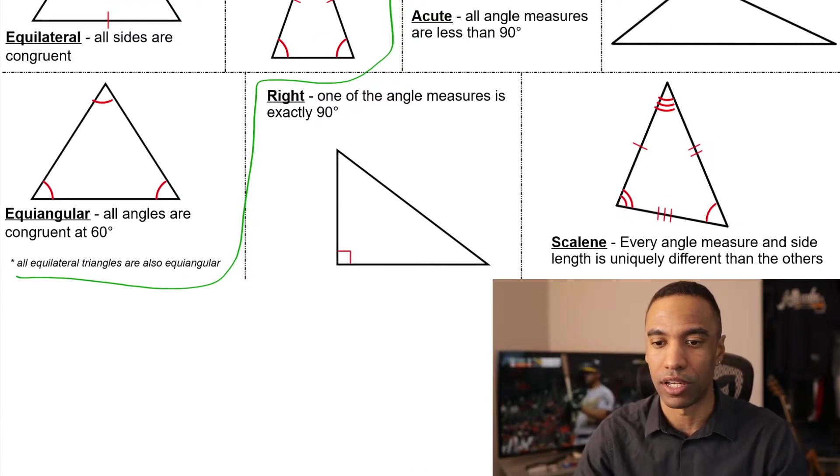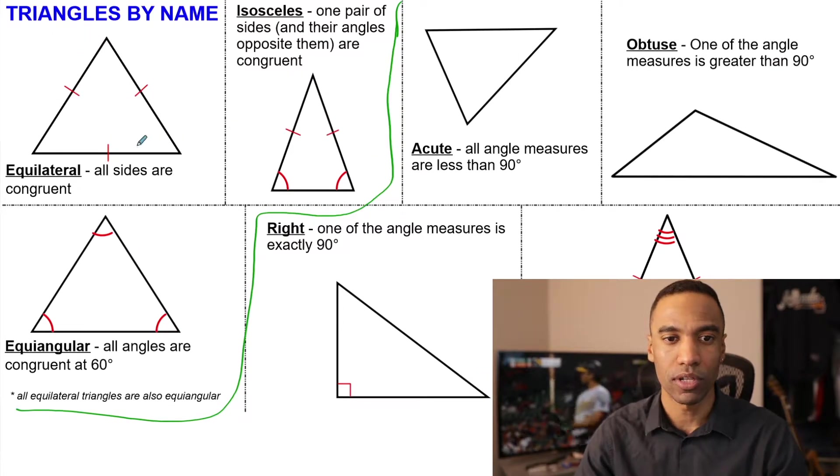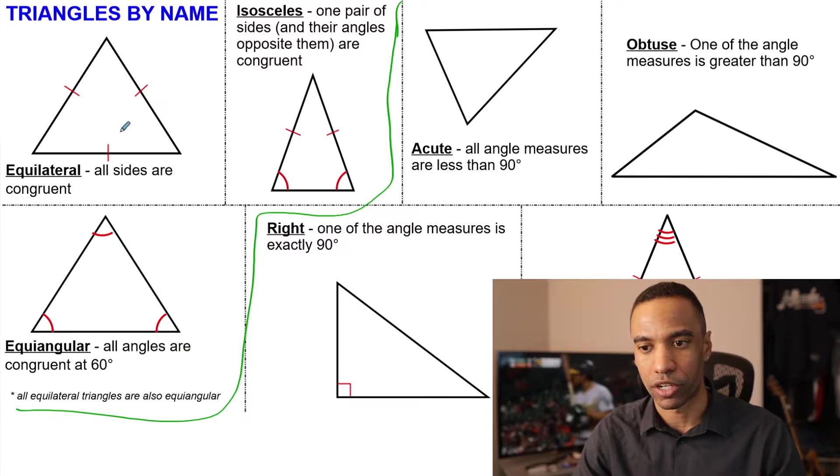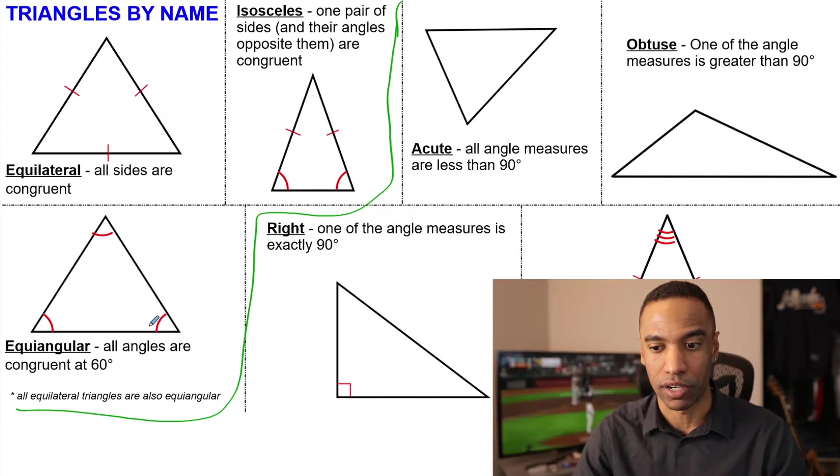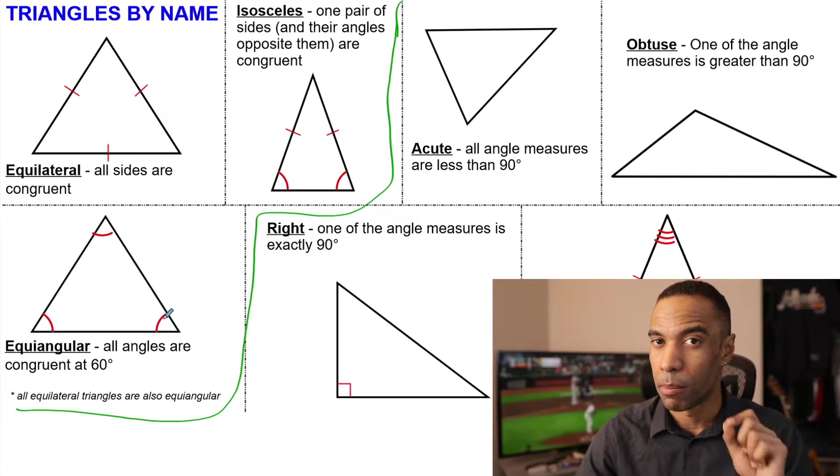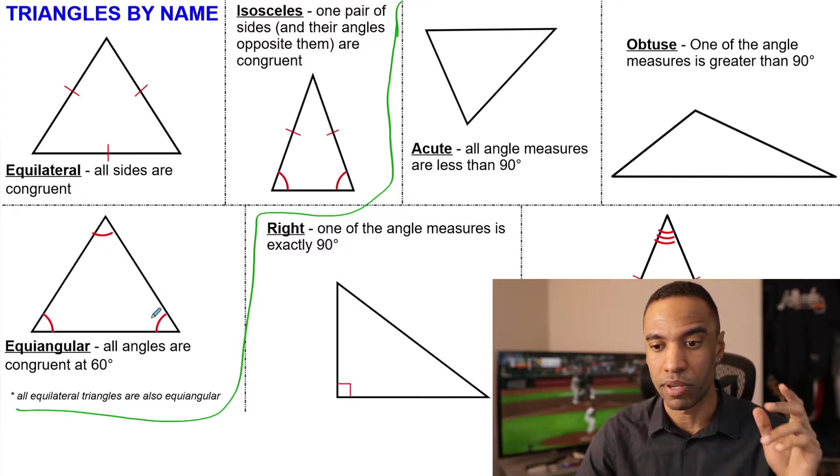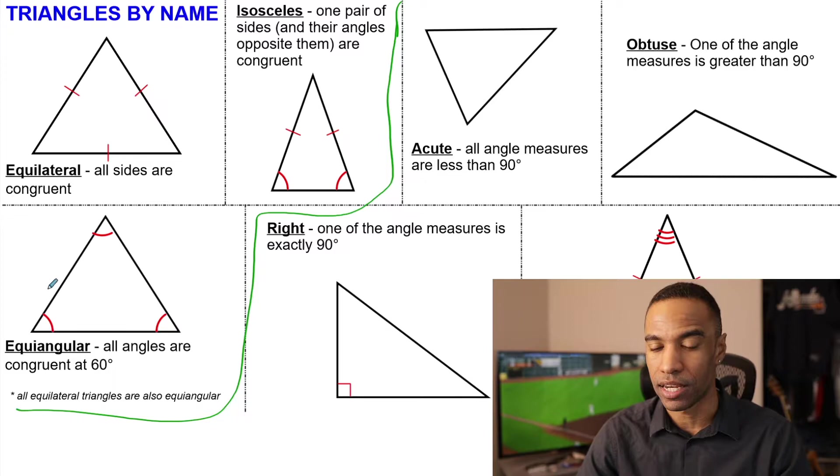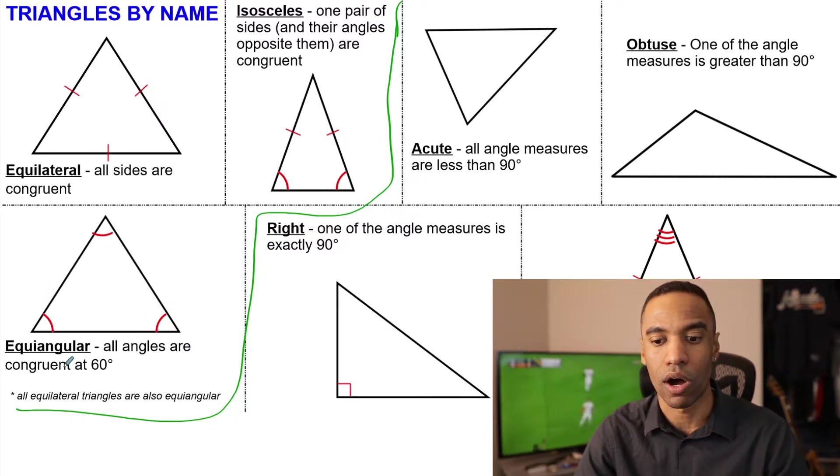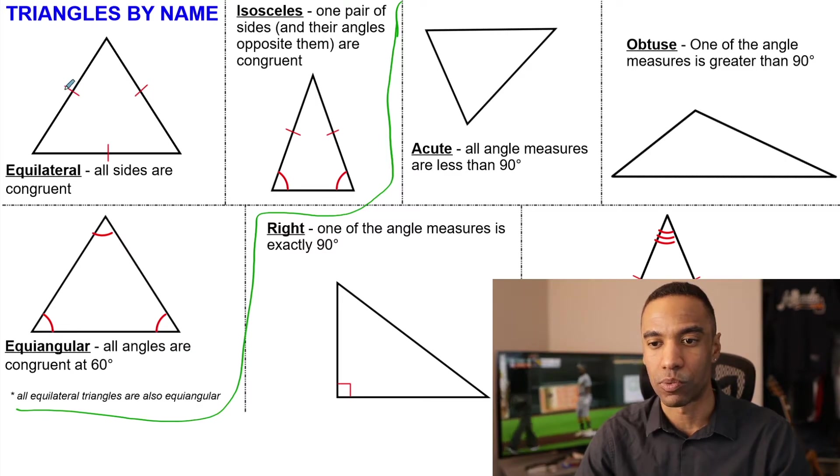And then on top of that, you could be a right triangle, acute triangle, or obtuse triangle. But looking at the equilateral slash equiangular, if all sides are congruent in a triangle, then all angles are congruent. Not only are they congruent, but they're actually all 60 degrees because we know the interior angle sum of a triangle is 180 divided by 3. You get 60.